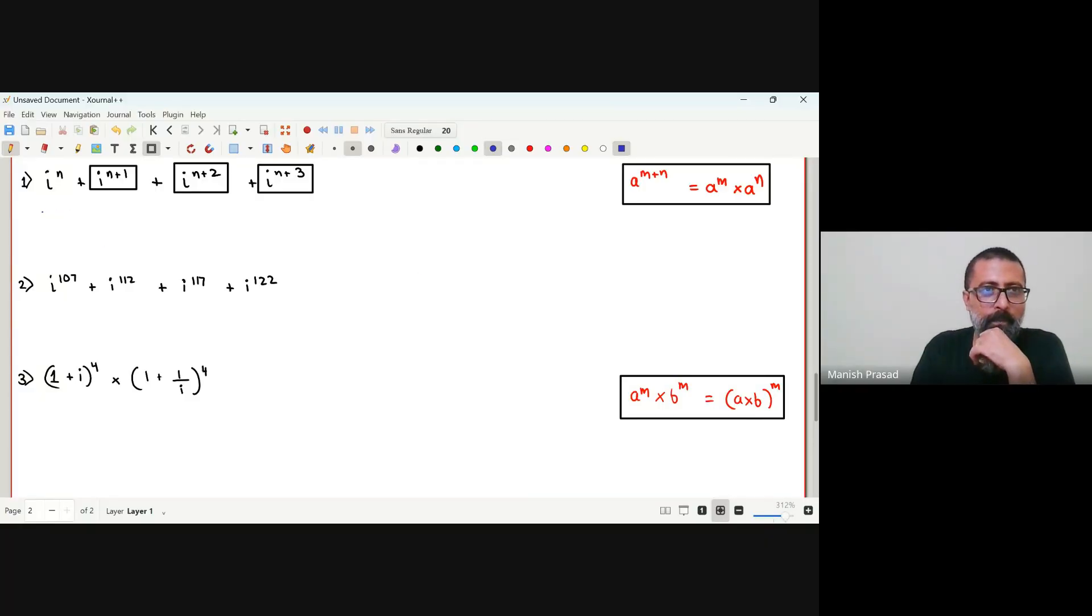The first one, you can see i to the power of n. We can write it as i to the power of n multiplied by i plus i to the power of n multiplied by i square plus i to the power of n multiplied by i cube. Now you can write it as i to the power of n.